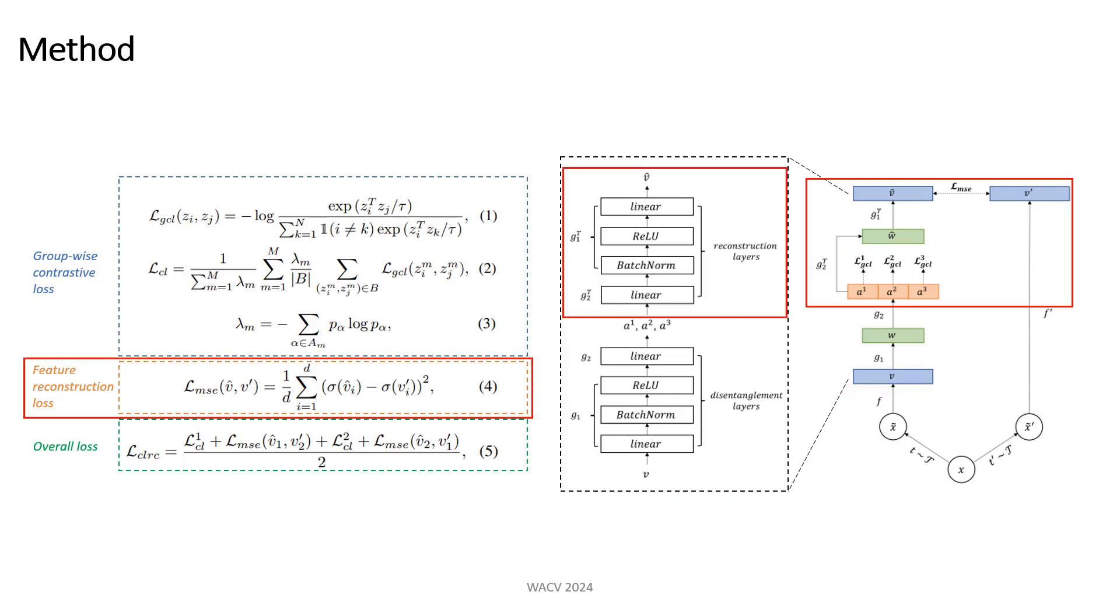To encourage learning of augmentation invariant representations, we further propose a feature reconstruction objective where the disentangled projection vectors are projected back to the image representation using the transpose weights of the projection layers. These reconstructed image representations are then encouraged to be consistent with the representation obtained by another copy of the input image through the mean square error loss given in equation 4.